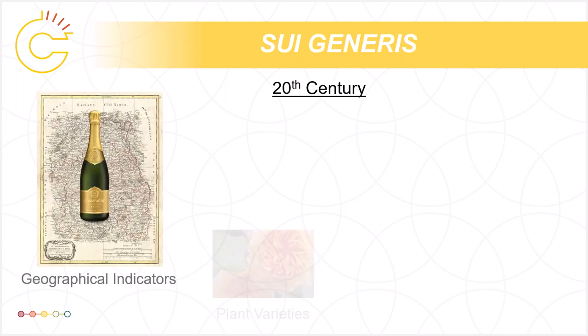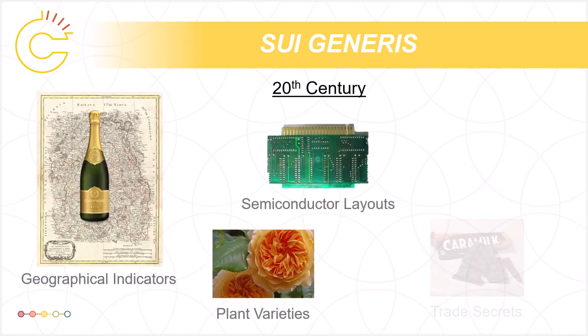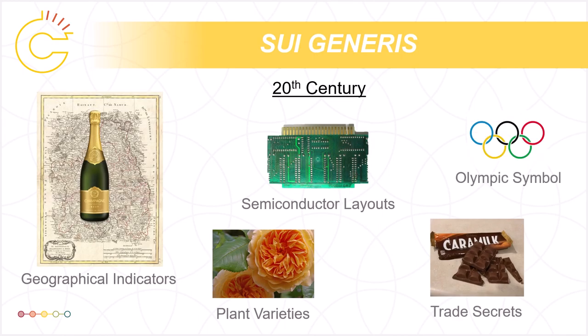Finally, there are several other forms of IP that exist that don't have much of a relation to copyright. These include the protection of plant breeders' rights for new species and varieties of plants, semiconductor layouts, domain names, ship hull designs, and even the Olympic rings, which are protected by their own international treaty.